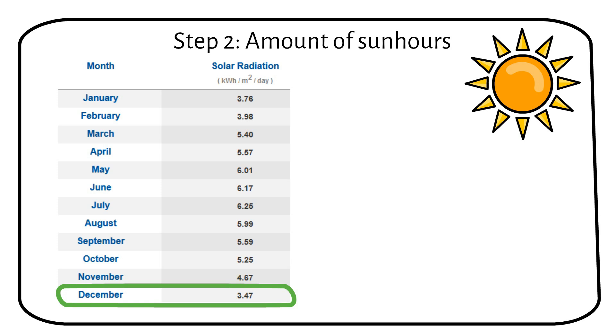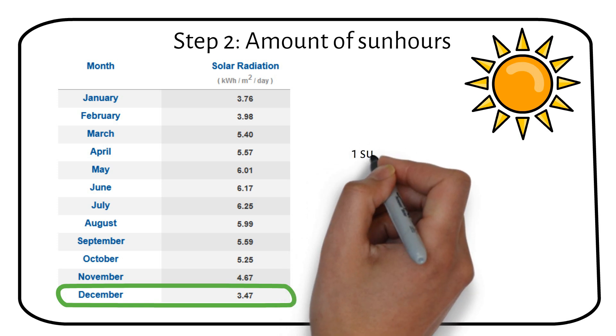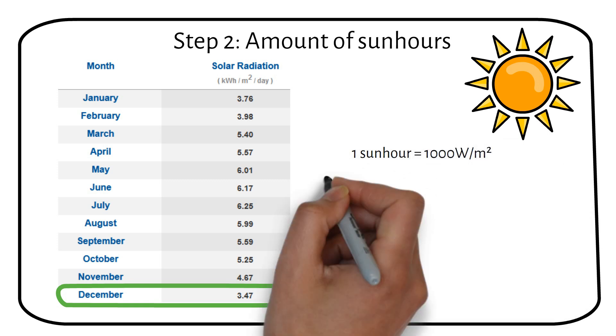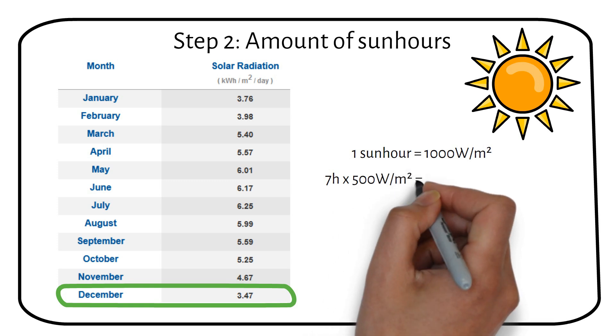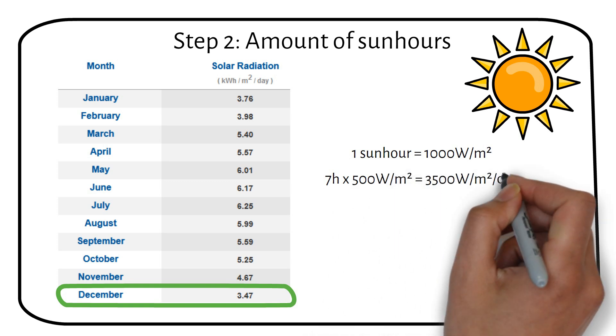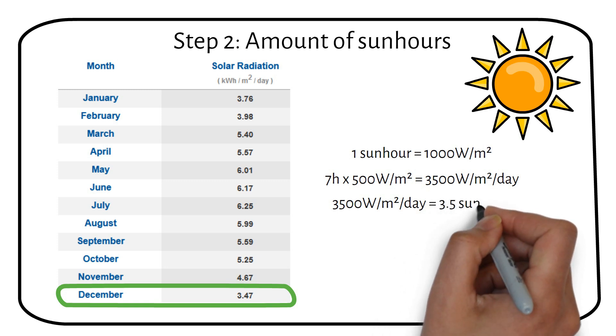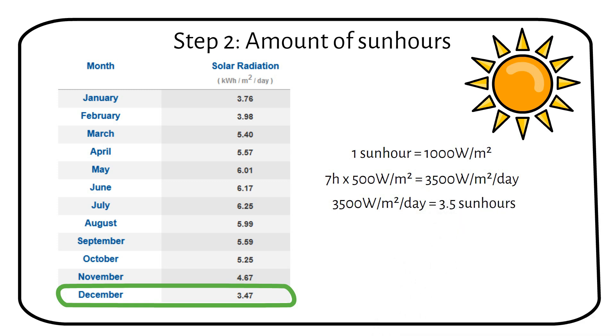Let me explain briefly. One sun hour equals 1000 watts per square meter. So if the sun shines for 7 hours a day at 500 watts per square meter, you would still have 3.5 sun hours. This means sun hours are not the same as the amount of hours the sun is out each day.